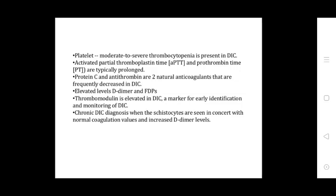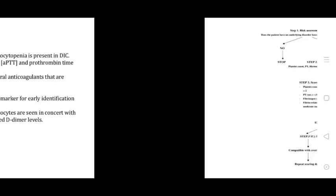Diagnosis: platelet count shows moderate to severe thrombocytopenia in overt DIC. Activated partial thromboplastin time and prothrombin time PT are typically prolonged. Protein C and antithrombin are natural anticoagulants that are frequently decreased in DIC. Elevated D-dimer and FDPs. Thrombomodulin is elevated in DIC and is a marker for identification and monitoring of DIC. Probable DIC is diagnosed when these abnormalities are seen with normal coagulation values and increased D-dimer levels.